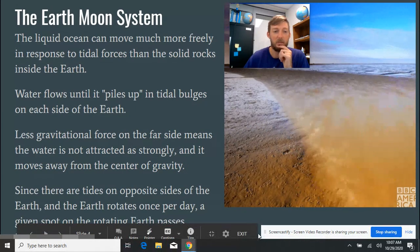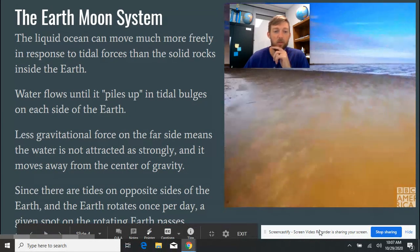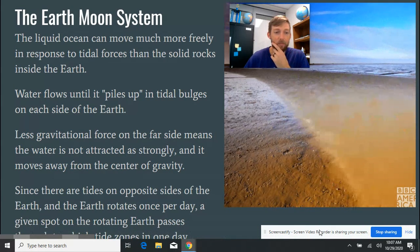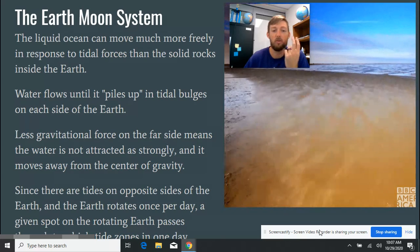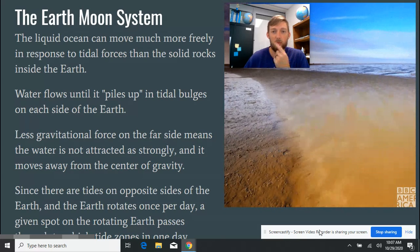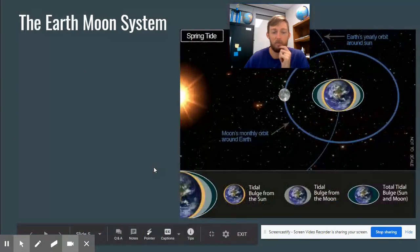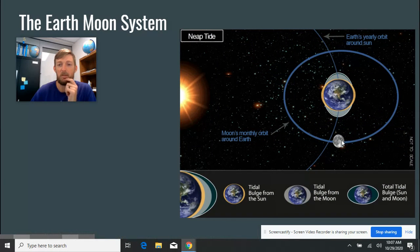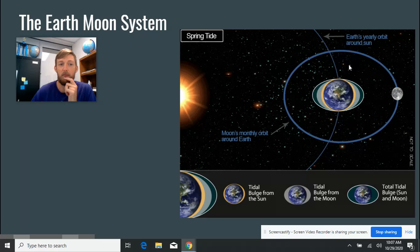Now, since they're on opposite sides of the Earth, and the Earth rotates obviously once in a day, the Earth passes through two tidal zones in one day. So let's look at this graphic for just a minute. So here we can see the Moon rotating around the Earth. Now it takes a month for the Moon to do that, but the Earth is spinning. It's spinning every day.